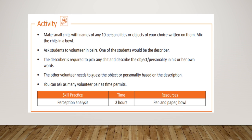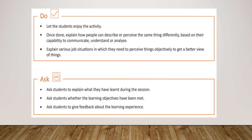The description given will reflect the student's own perception. You can ask as many volunteer pairs as time permits. The perception analysis activity has a time allocation of two hours, and the resources required are pen and paper.